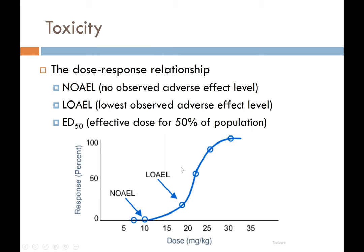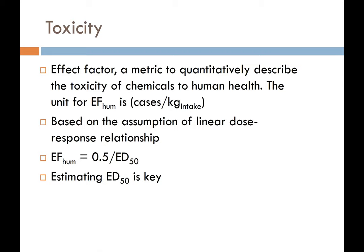To estimate toxicity, we use the effect factor (EF), which is also commonly used in other LCIA methods. This metric quantitatively describes the toxicity of chemicals to human health. The unit is cases per kg intake, which can be seamlessly combined with the exposure model output. This effect factor is based on the assumption of a linear dose-response relationship, which may not always be true, but this is how we do it for now.